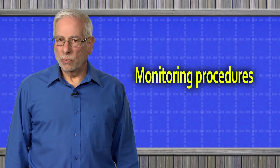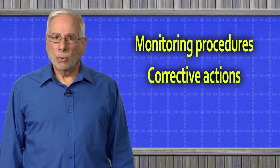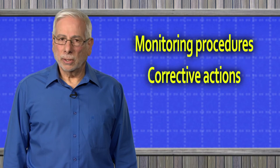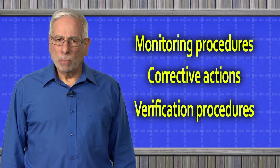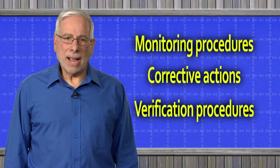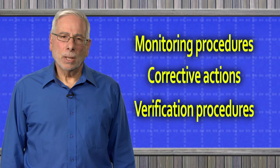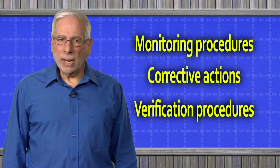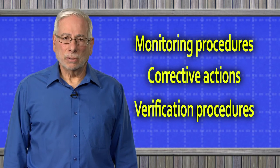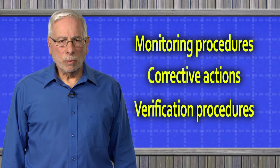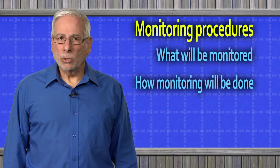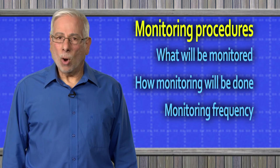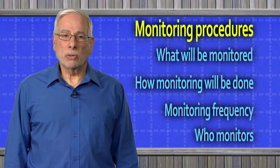Our sample HACCP plans included monitoring procedures for the critical limits, corrective actions for when a critical limit deviation occurs, and verification procedures. Monitoring procedures should directly measure the critical limit parameters you've established and should identify what will be monitored, how monitoring will be done, how often monitoring will be done, and who will do the monitoring.